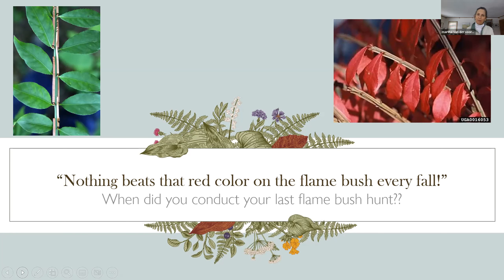Burning bush is super easy to identify — it has that winged look on the stem. When it's young, it's really easy to pull up. It's dispersed by birds and gets scattered throughout woods very quickly, so it is something we really need to get rid of.